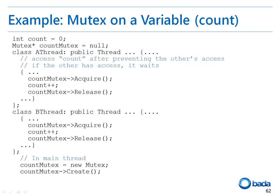Then another thread can access the variable count in the same way. At this time, when thread A acquires the mutex and thread B attempts to acquire the mutex, the acquire function does not return until thread A releases the mutex. Therefore, only one thread can access the variable count at a time.